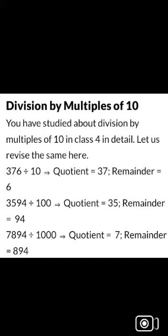Next, three thousand five hundred ninety-four divided by hundred gives quotient thirty-five and remainder ninety-four. Next, seven thousand eight hundred ninety-four divided by one thousand gives quotient seven and remainder eight hundred ninety-four. Thank you, students.